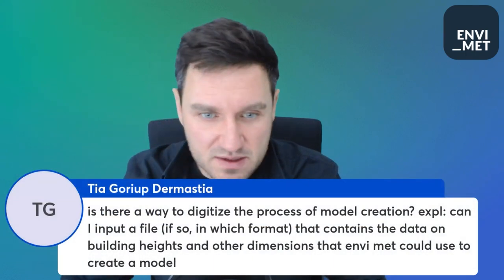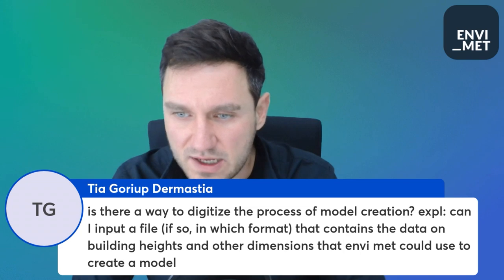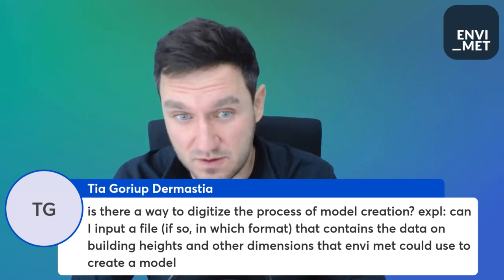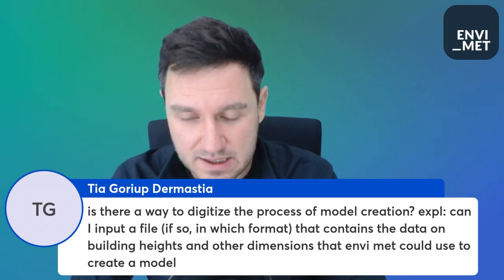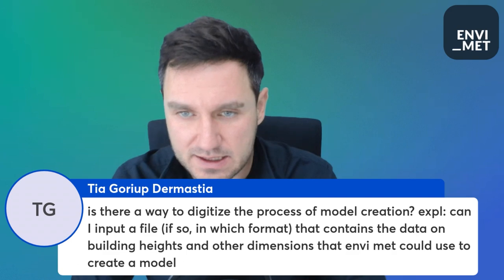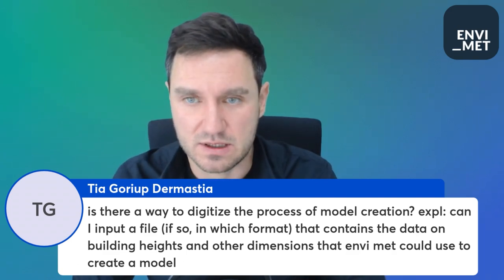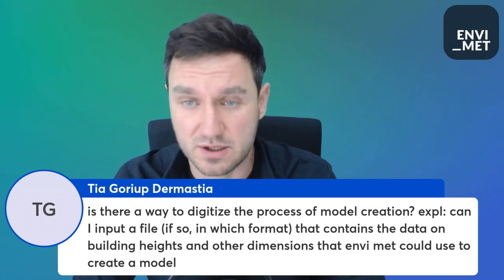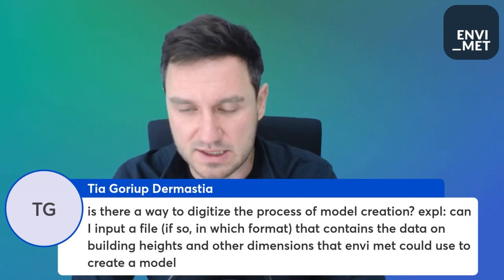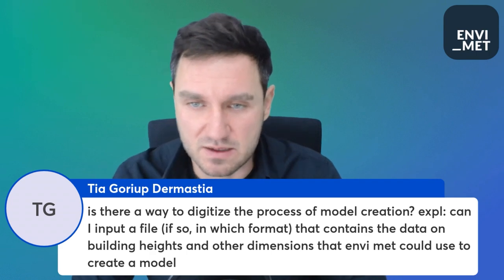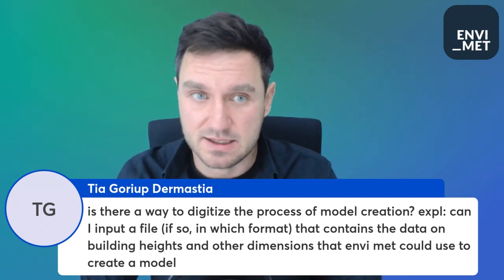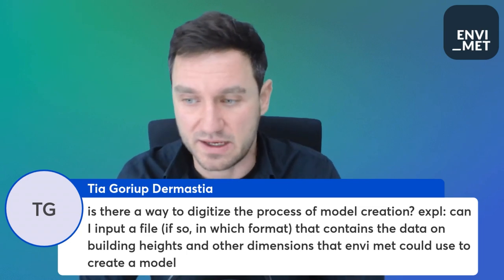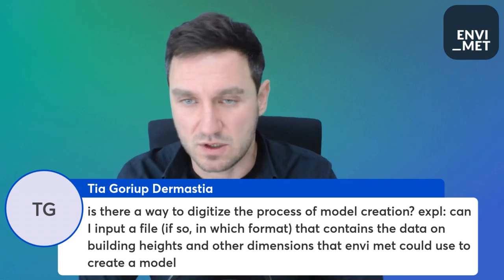Question: Is there a way to automate the model area creation process — for example, by inputting a file with building heights and other dimensions? Yes, a very good question. The easiest way is using the QGIS plugin, because QGIS is a free and open source software you can download from their website. You can input a huge variety of geodata formats — building data, vegetation data, surface data — and use this information to create an Envimet model area very quickly for a large domain.